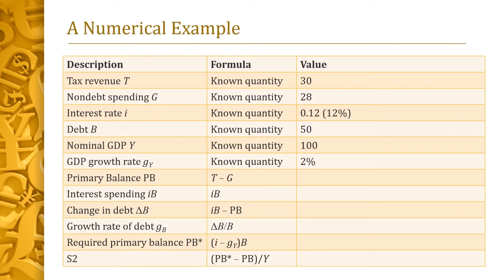Let's now work through a numeric example to illustrate the concepts we've just learned. Let's assume that tax revenue T equals 30, non-debt spending G is 28, the interest rate I is 12 percent, debt B is 50, nominal GDP Y is 100, and the growth rate G_Y of GDP is 2 percent. First, let's compute the primary balance PB. It simply equals revenue T minus non-debt spending G, which is just 30 minus 28, or 2. Next, let's compute interest spending IB. This is just 6 — the interest rate I of 12 percent times debt B of 50.